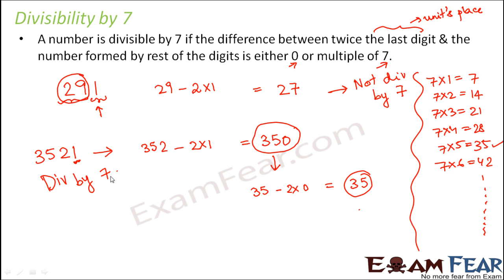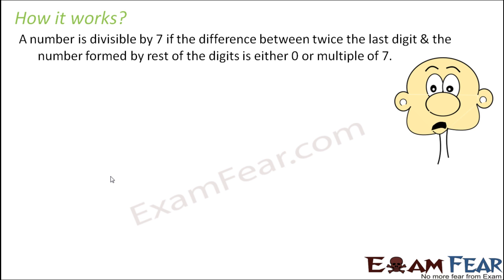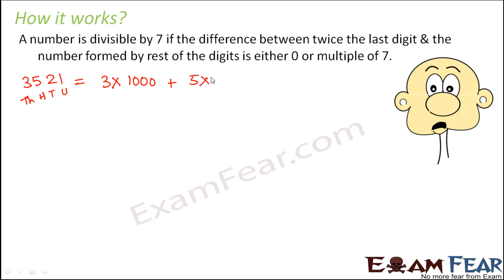Now let us understand why this rule works, using the same example 3521. We expand the number in the usual way by place value: 3 × 1000 + 5 × 100 + 2 × 10 + 1 × 1. All terms except the units place are multiples of 10, so we can write this as 10 × (300 + 50 + 2) + 1.